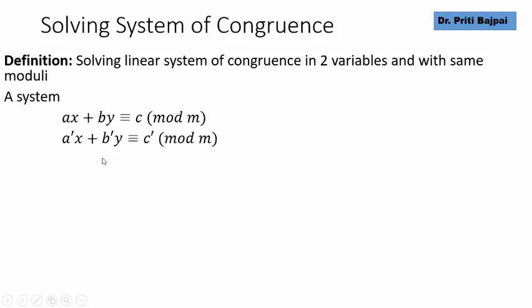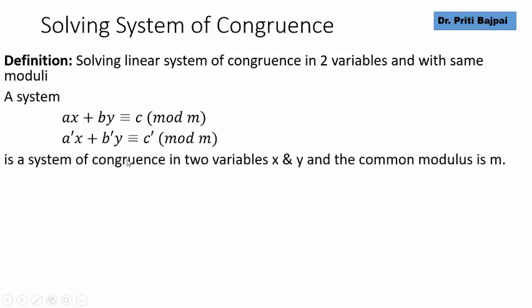You will notice the congruences have two unknowns x and y and they have a common modulus m. Such a system is called a system of congruence in two variables x and y with the moduli m.